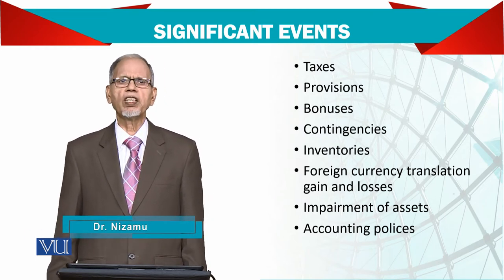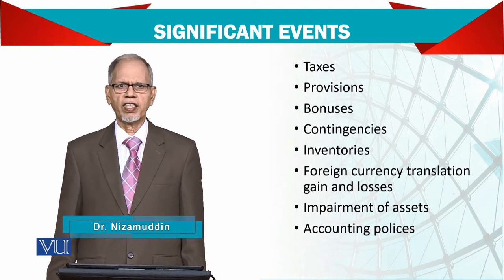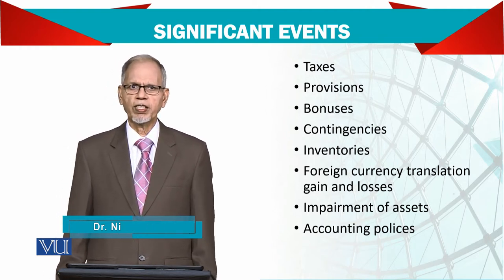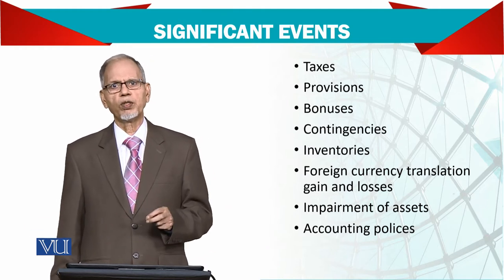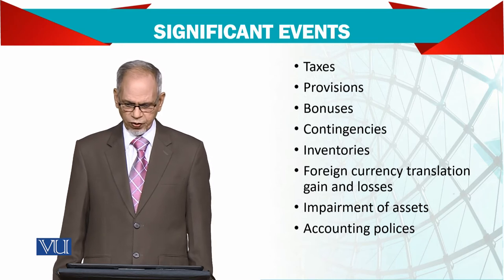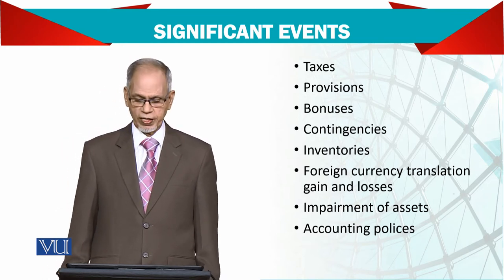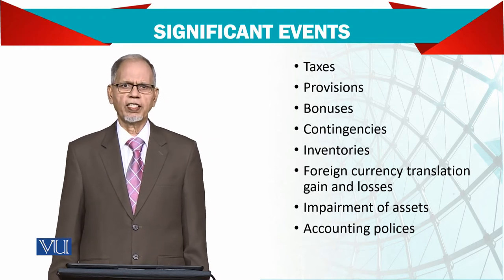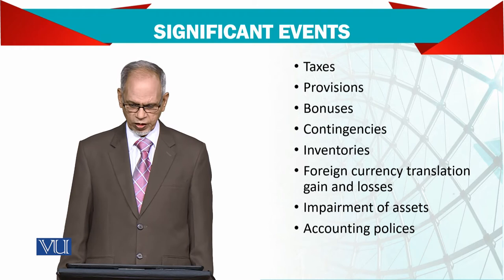Inventories — usually what we do about inventory, we do stock-taking every year end. But for the purpose of the quarter, we need to do stock-taking at the quarter end as well. Then foreign currency translations — gains and losses, if there are any. Impairment of assets: in case there is an impairment of an asset, that should also be taken into account.